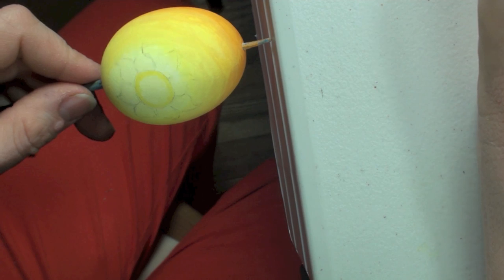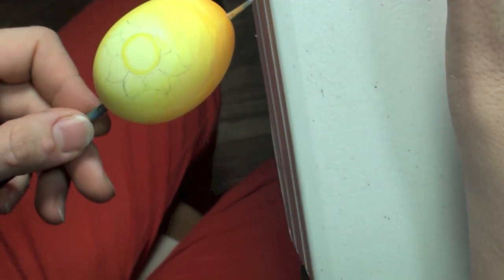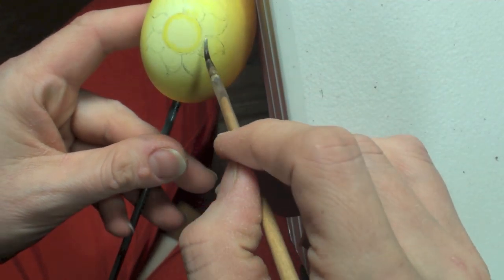Once we're done with the center of the sun, we're going to take the same brush and paint outside of the circle on the rays of the sun, just the beginning of it, not the whole ray.